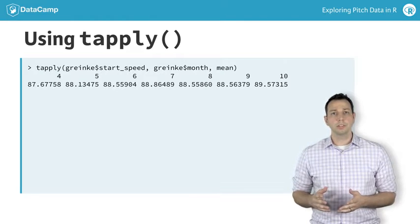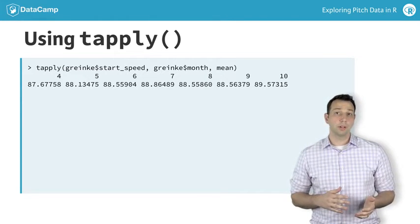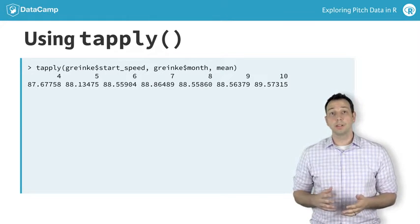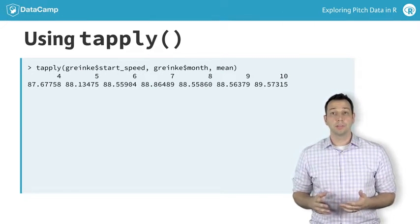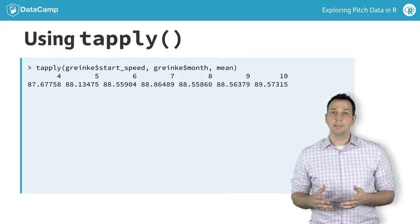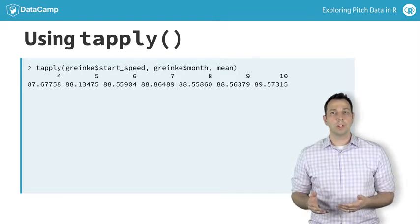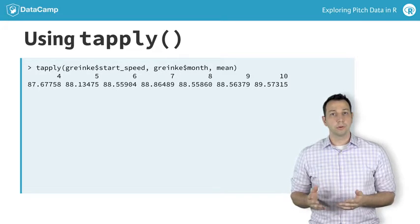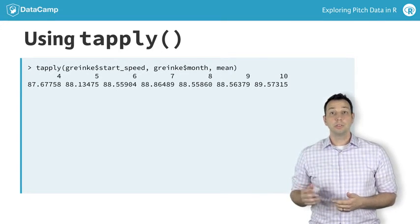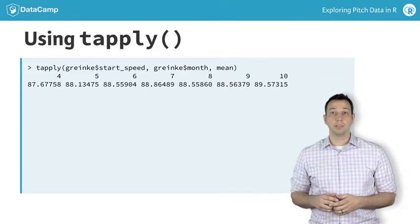The tapply function applies another function, such as mean, separately across groups, such as month or pitch type. tapply simply requires that you first tell R the variable you want to summarize, the grouping variable, and the function to apply across each group.